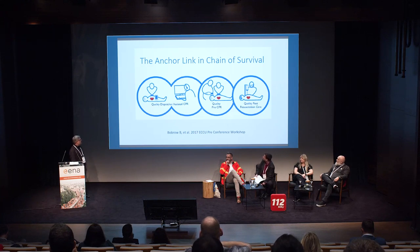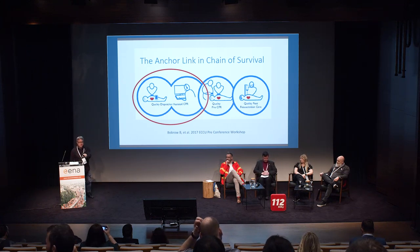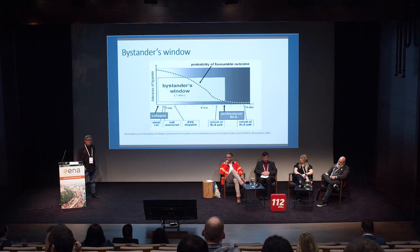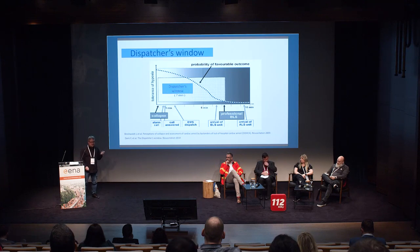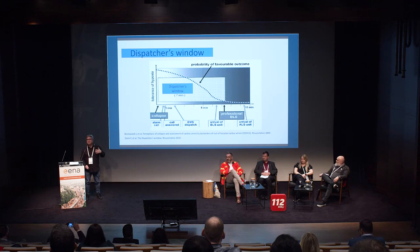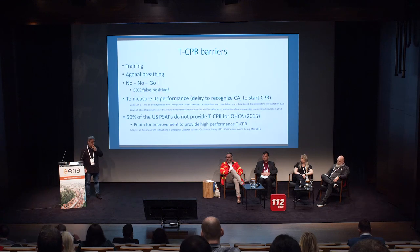My most favorite slide shows the close work that bystander and dispatcher have to do together to make people survive. On this picture you can see the survival curve — the more time passes, the less people will survive. There is a bystander window, also called the dispatcher's window: a time of 7, 10, 15 minutes where dispatcher and bystander can do something to make people survive. It's usually not the ambulance or the physician that saves people in out-of-hospital cardiac arrest, but what they do during those 10 to 15 minutes. So first, they have to perform telephone CPR.